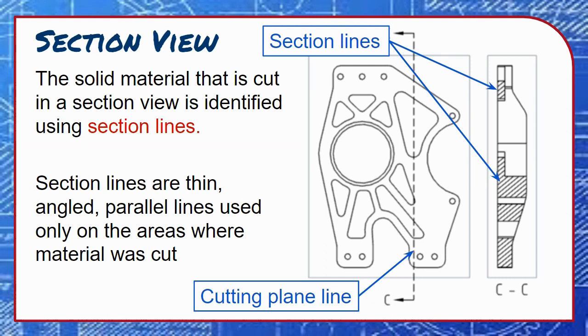Section lines indicate where the solid material of an object has been cut to reveal a section view. These are thin, angled, parallel lines. They should not be drawn parallel or perpendicular to any of the object edges that they meet, and the same angle and spacing should be used throughout a piece of material, even when the cut areas are disconnected by non-cut areas.